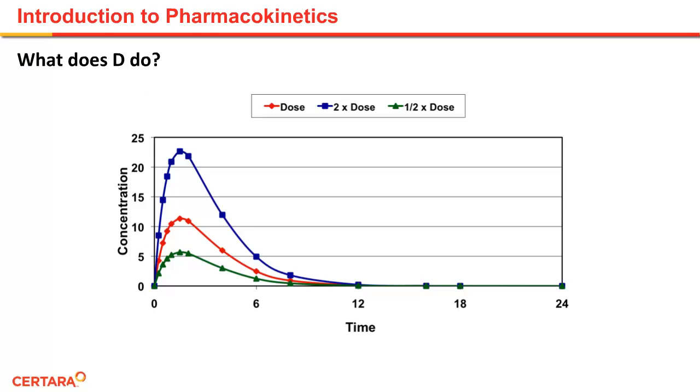What do changes in dose do? Here we depict three different dose levels. Let's say that the red line is a normal dose. If the dose is doubled, one can see that the concentrations increase, the blue line. If you decrease the dose by half, you can see that the concentration decreases, the green line. Therefore, dose affects how much drug is in the body at any given point in time.